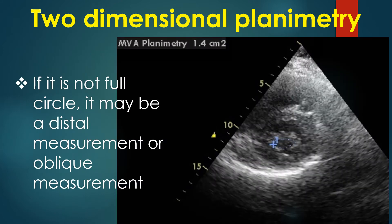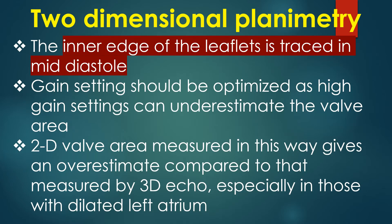If it is not a full circle, it may be a distal or oblique measurement. Mitral valve area by planimetry on echocardiogram is usually obtained from the parasternal short axis view. It can also be obtained from the basal transgastric short axis view by transesophageal echocardiography. The inner edge of the leaflets is traced in mid-diastole. Gain settings should be optimized, as high gain settings can underestimate the valve area.